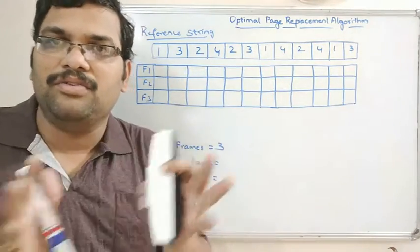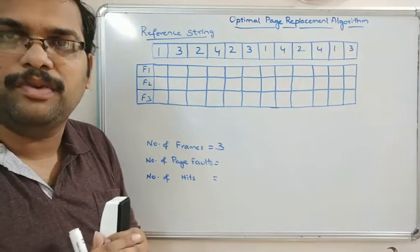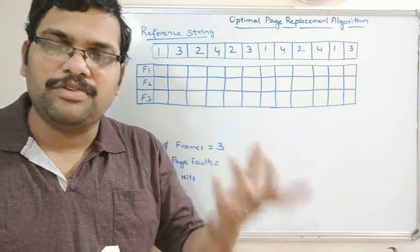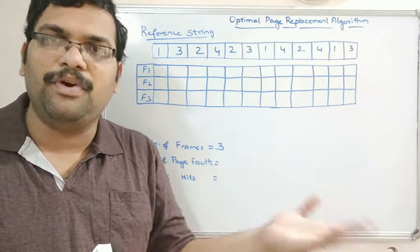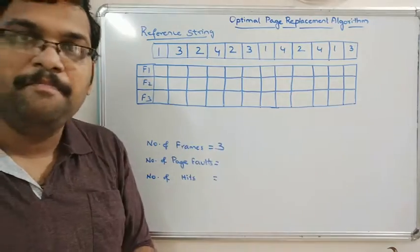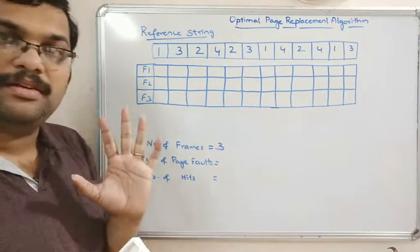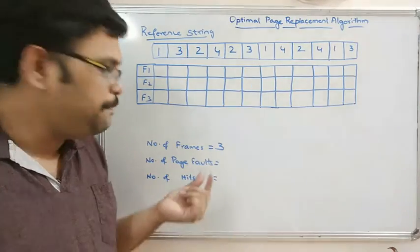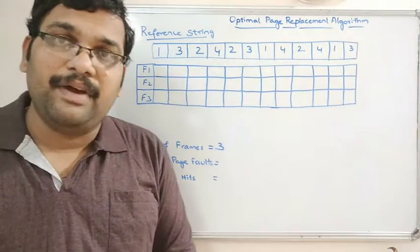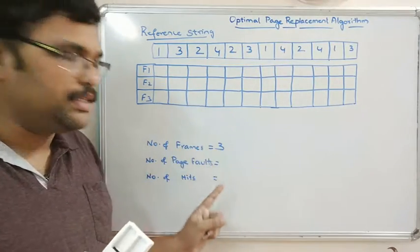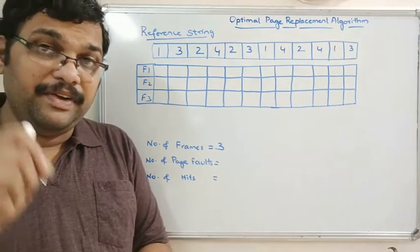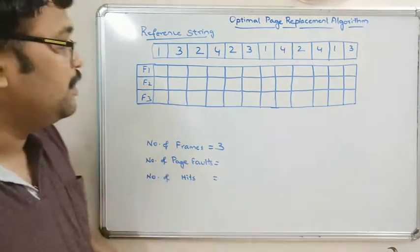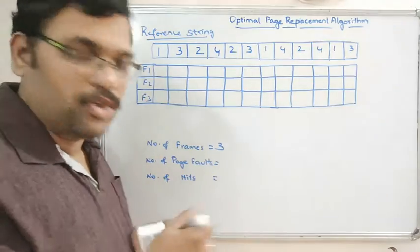We'll solve a problem to clarify any doubts. I'm using the same reference string we solved in both FIFO and LRU, and I've taken three frames. We need to find the number of page faults and the number of hits. A page fault occurs when the required page is not available in main memory; a hit occurs when the required page is already available in main memory.